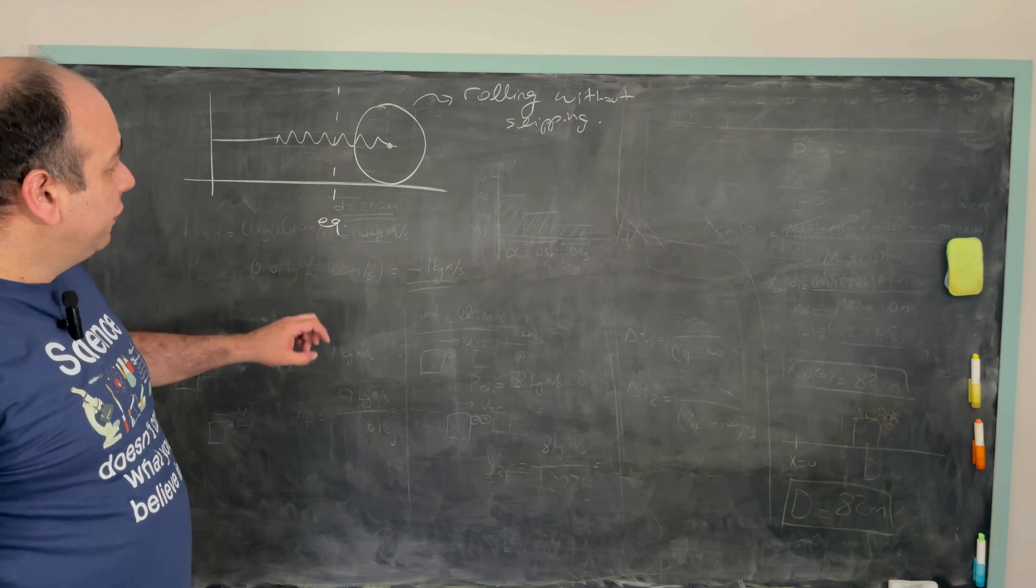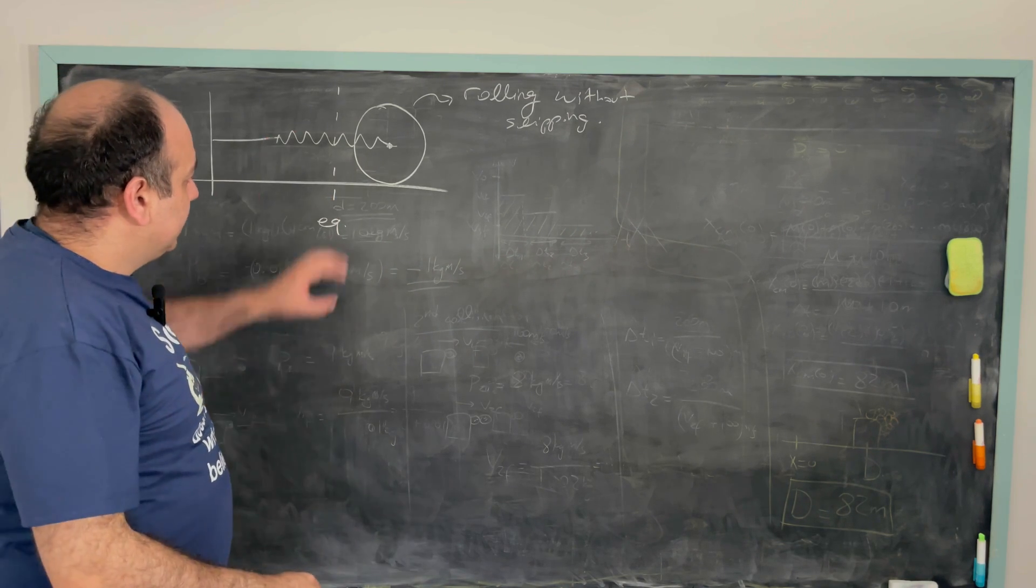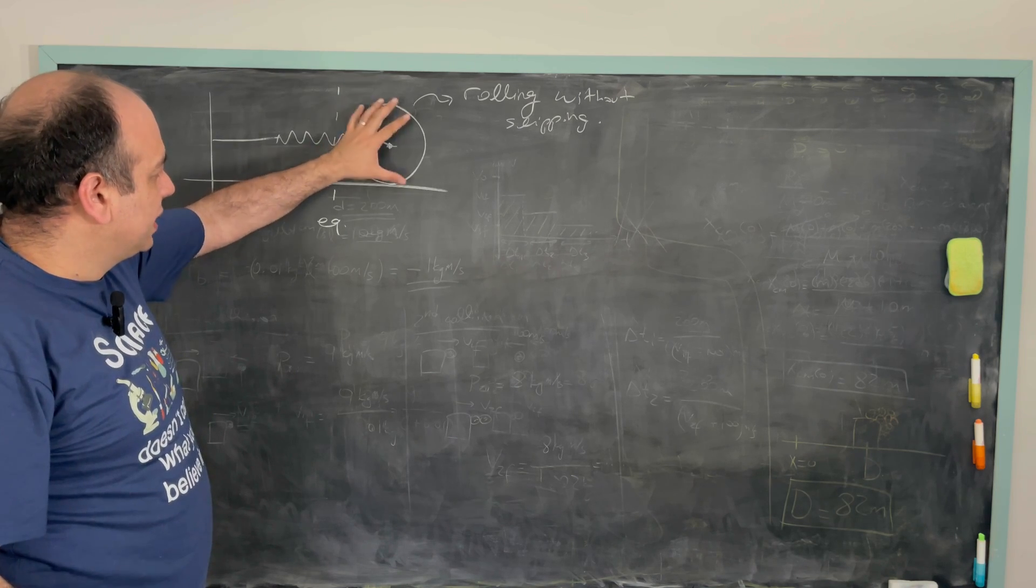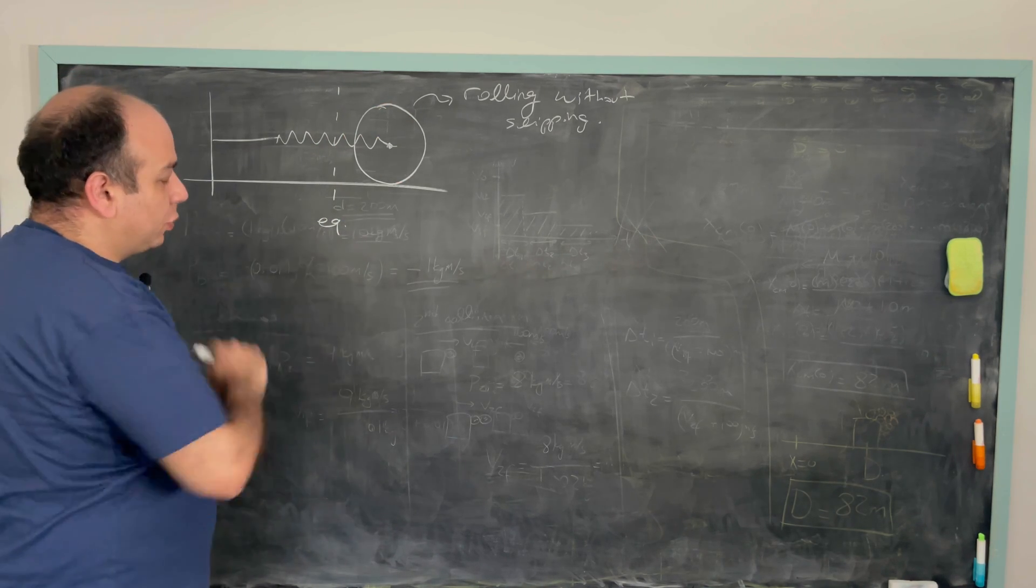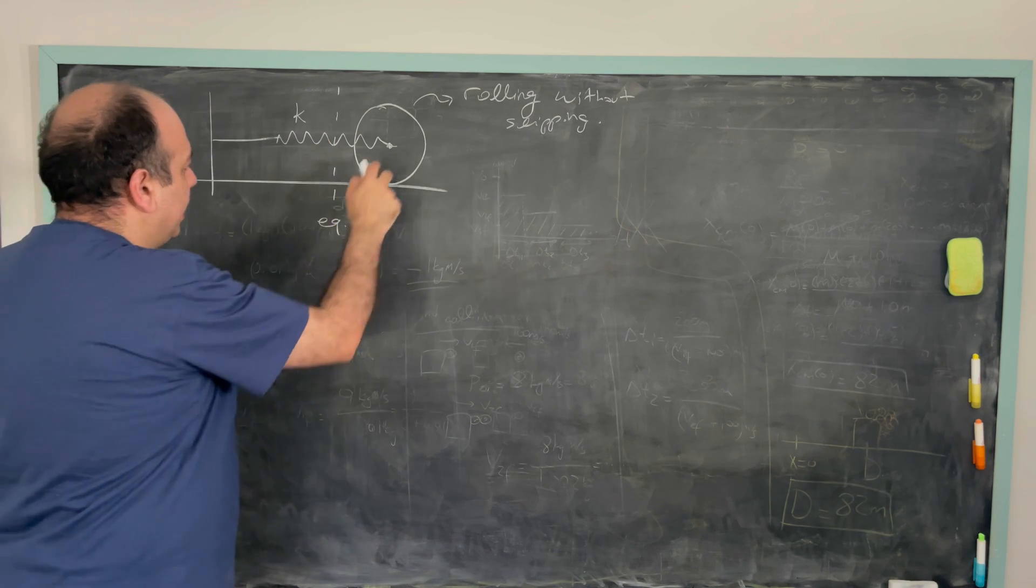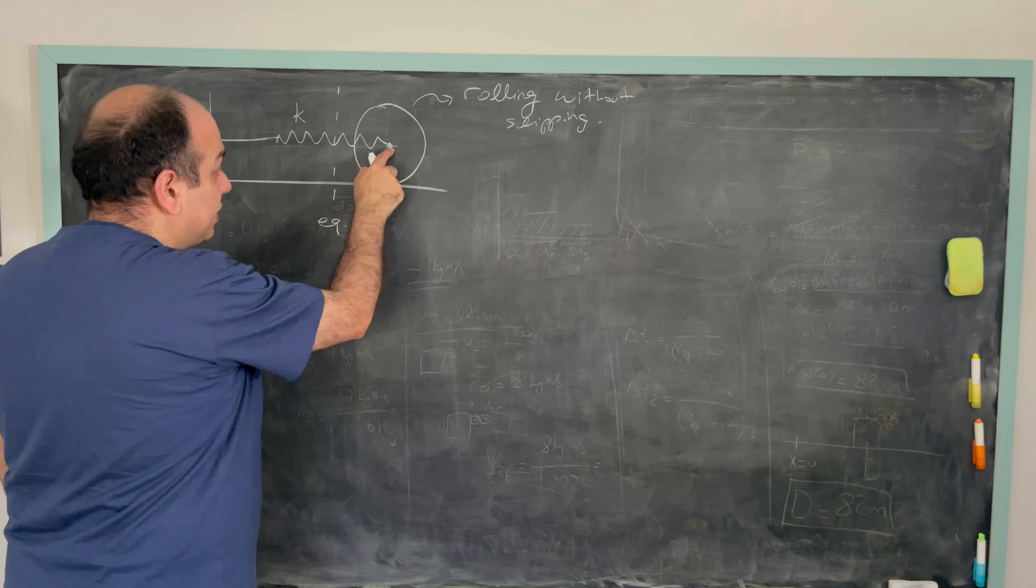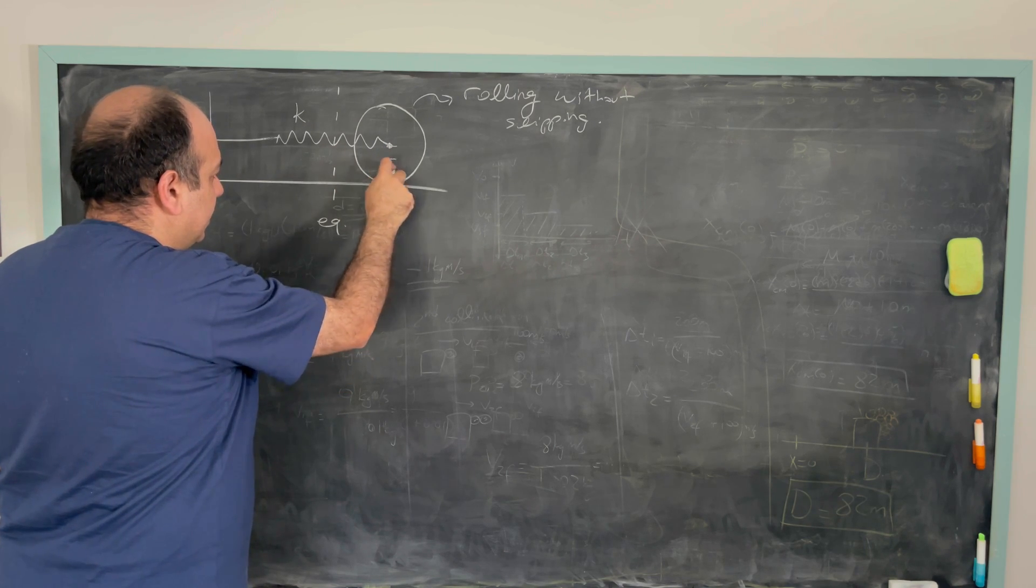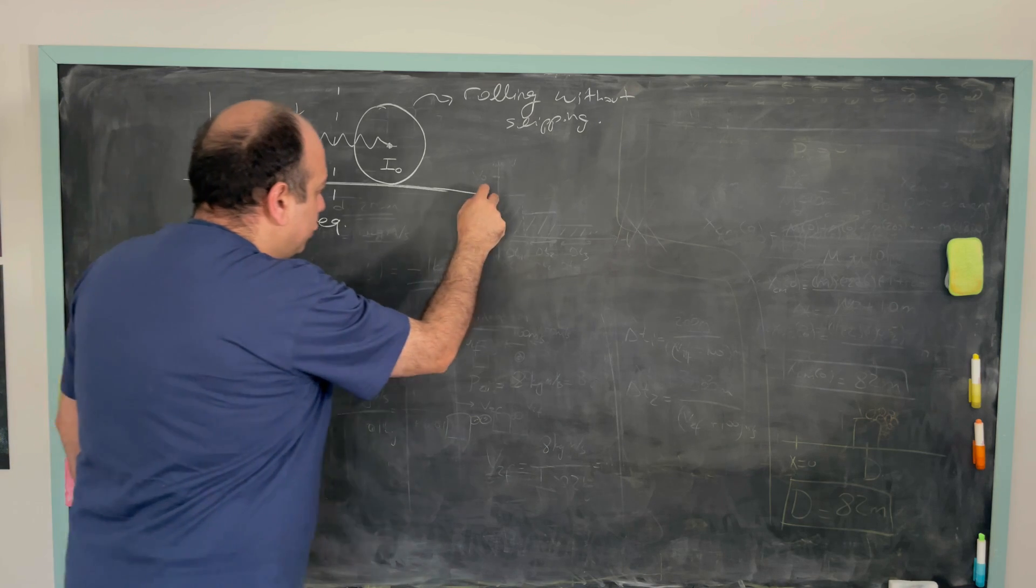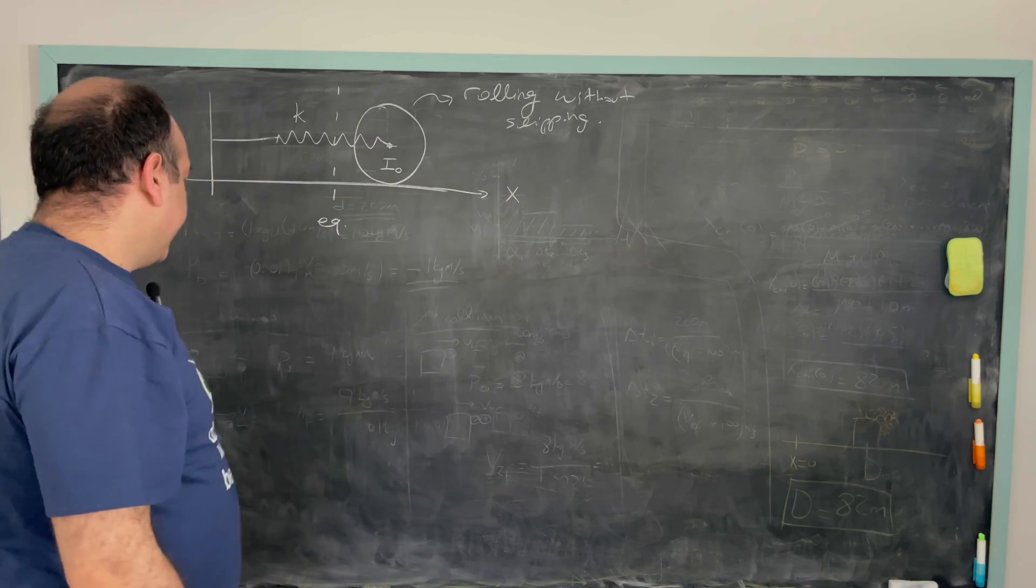Okay, so we would like to find the small oscillation frequency of this object about this equilibrium point. And this spring has a spring constant k and this object has a moment of inertia with respect to its center of mass which is given as I0. I'll choose this direction to be my x direction.